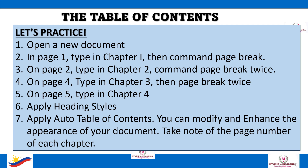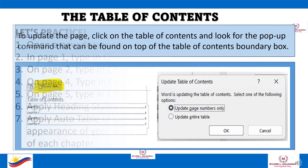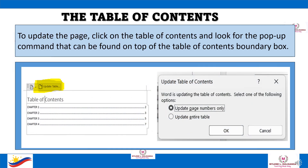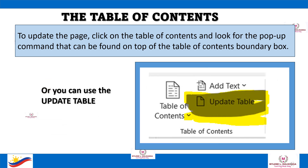Apply Auto Table of Contents. You can modify and enhance the appearance of your document. Take note of the page number of each chapter. To update the page, click on the Table of Contents and look for the pop-up command found on top of the Table of Contents boundary box. Or you can also use the Update Table icon.